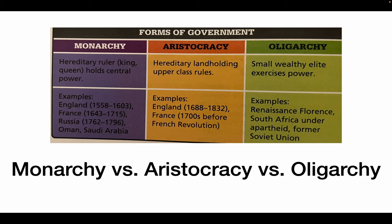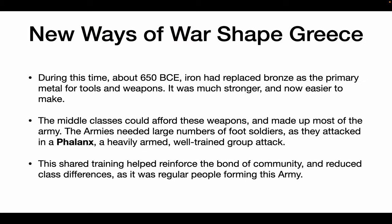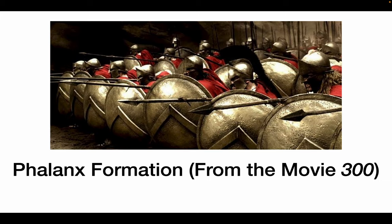Here are the differences and similarities between the three — it would be a good idea to take note of this one. During this time, about 650 before the Common Era, iron had replaced bronze. It was a stronger metal and also easier to make. So the middle classes could afford these weapons and would volunteer or be drafted into the armies of these Greek city-states, often as foot soldiers. When they attacked, they attacked in a well-trained group attack called a phalanx, where they basically moved as one giant unit. This shared training helped reinforce the bonds of community and reduced class differences because now more regular people were joining the army. This is what a famous phalanx looks like from the movie 300.